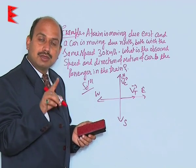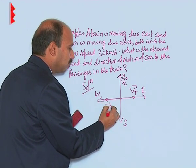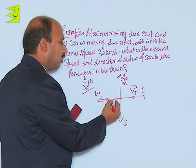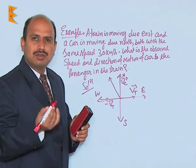You have to bring the train at rest, so you superimpose another vector here, that is minus Vt. Get the resultant velocity of these two. The angle between them is 90 degrees, so easily you can get it.